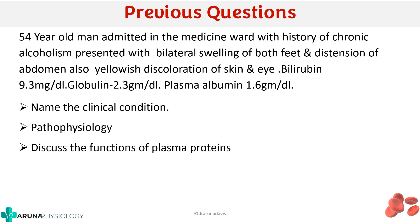This is a question that was asked previously: A 54-year-old man admitted in a medicine ward with a history of chronic alcoholism presented with bilateral swelling of both feet and distension of abdomen, also yellowish discoloration of skin and eye. The bilirubin level is 9.3 mg per deciliter, globulin is 2.3, and plasma albumin is 1.6. Name the clinical condition, what is the pathophysiology, and discuss the functions of plasma proteins.